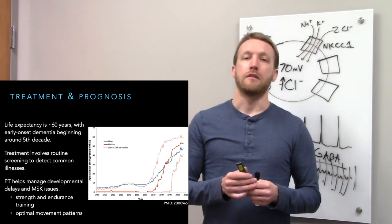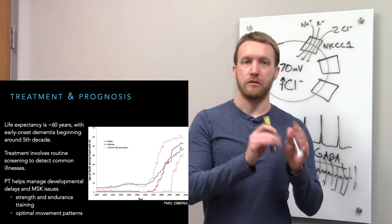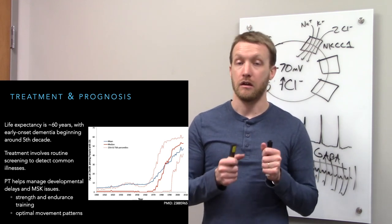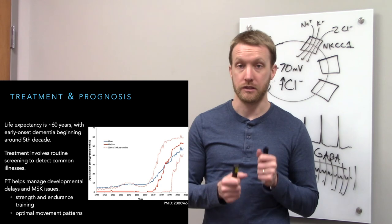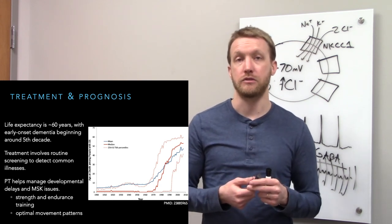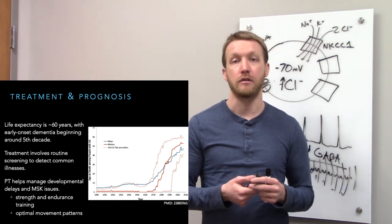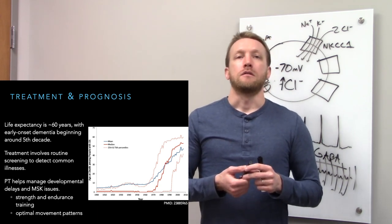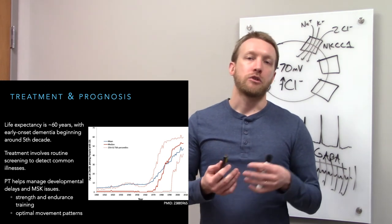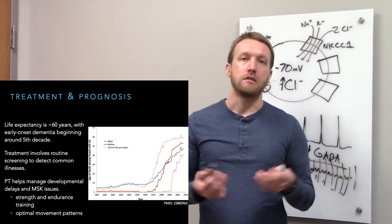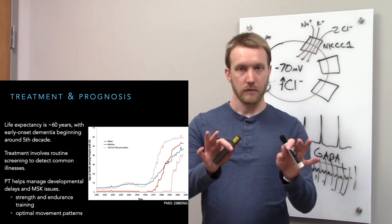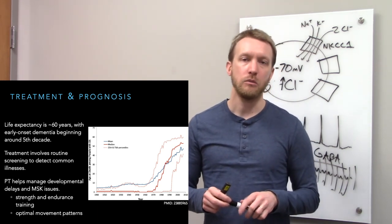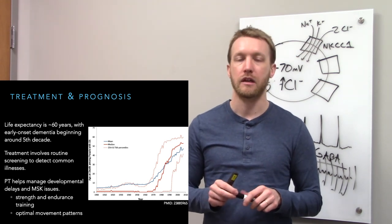Because of this increase in routine screening and better detecting of these illnesses in people with Down syndrome, the life expectancy has increased dramatically over the last greater than century or so. Now the life expectancy is somewhere in the ballpark of 60 years or so. But we're not going to escape that early onset dementia. That will begin somewhere around the 40s.